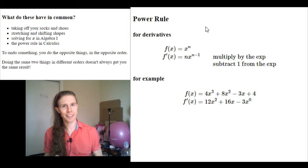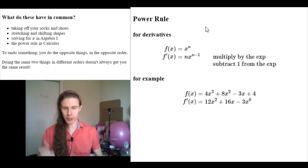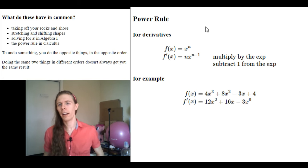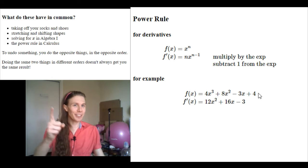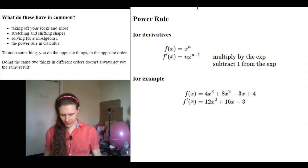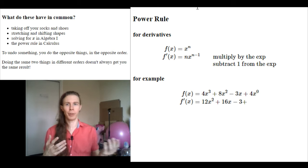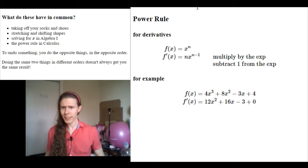Anything to the 0 power is 1, so I don't need to write that. In the same way as I didn't need to write that, there's an invisible x to the 0 here on that 4, and so whenever I'm thinking about that, the n is 0, so I multiply by the exponent, and it zeros everything out. So this always 0 for the constant part. And I don't need to write plus 0, because anything plus 0 is 0. And I'm done.